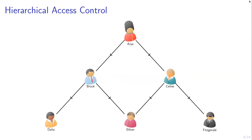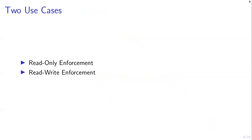The same holds for Brock and Selene — they have some users below them in the hierarchy, like Ethan, but Brock can access files that Selene cannot, like Dahlia's files, and vice versa. So Brock and Selene are not comparable. At the top we have ARIA, who is above everyone in the hierarchy, because from ARIA to everyone there is a path.